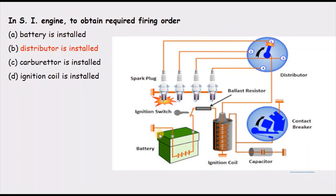The battery supplies the energy required. The carburetor is outside the ignition system and supplies the air-fuel mixture. The ignition coil functions as a transformer to step up the voltage. So the correct answer is B — the distributor is installed in the ignition system of an SI engine to obtain the required firing order.